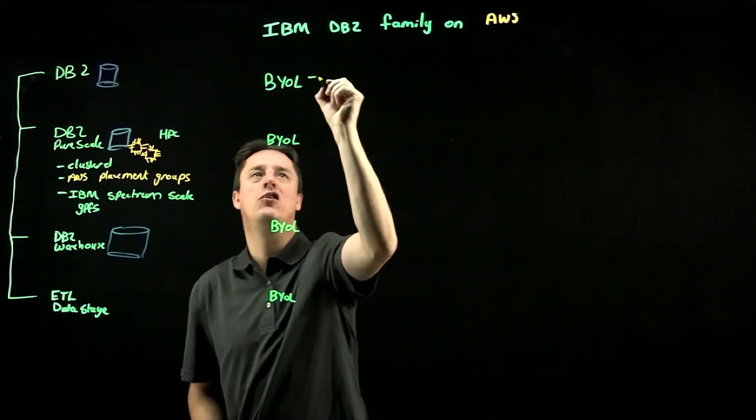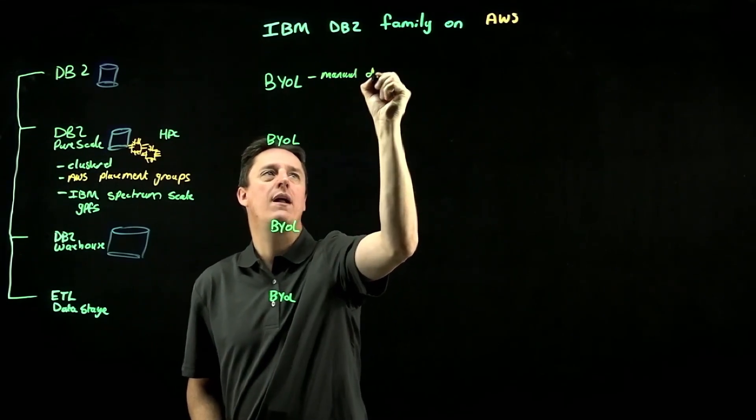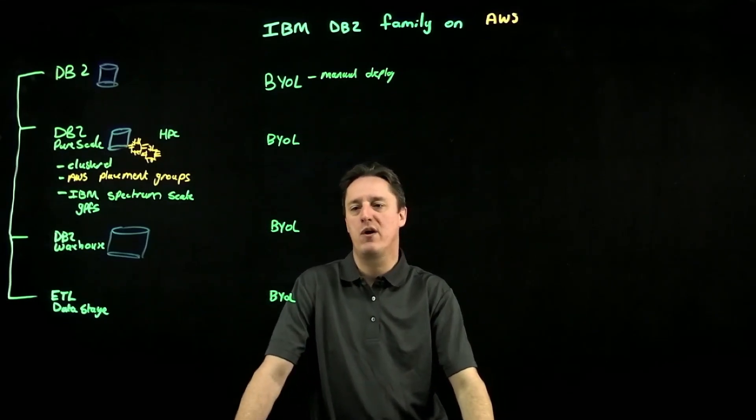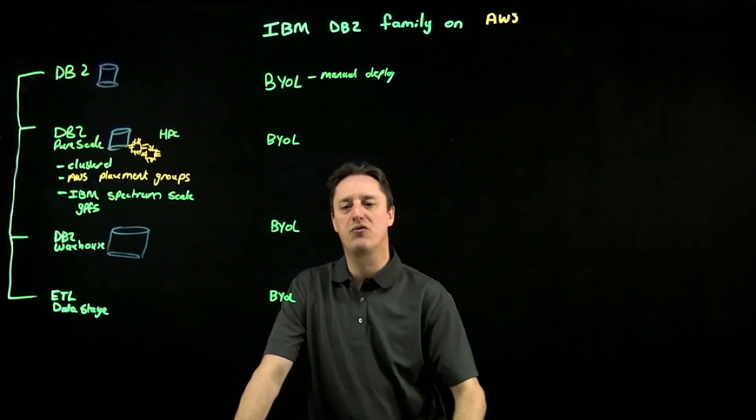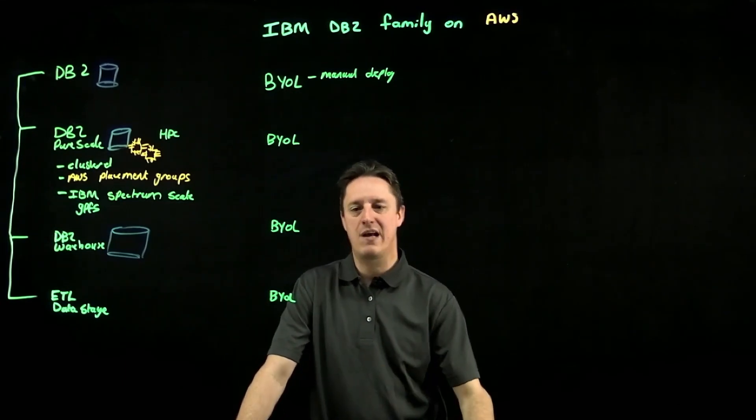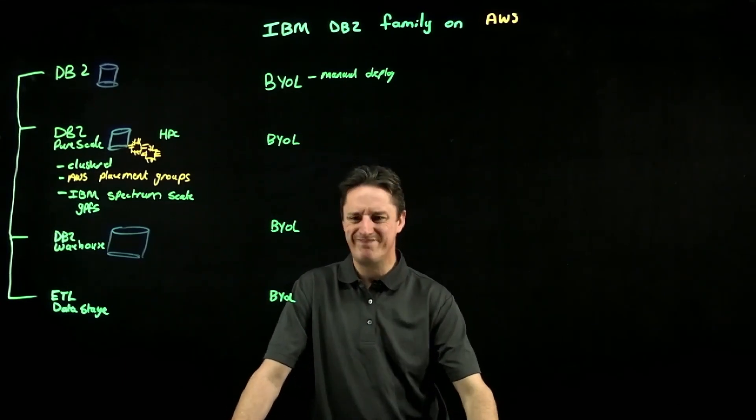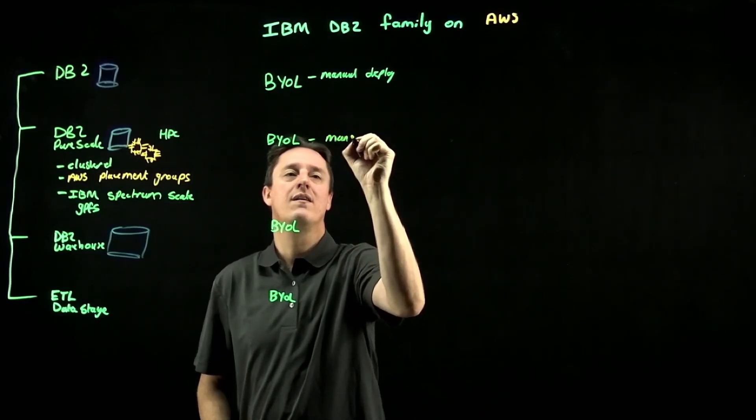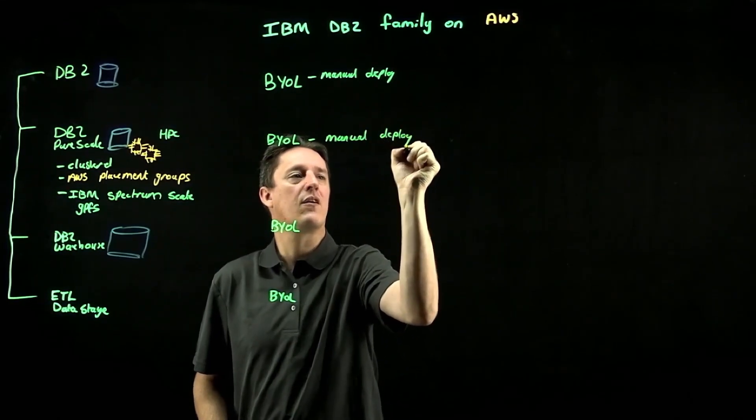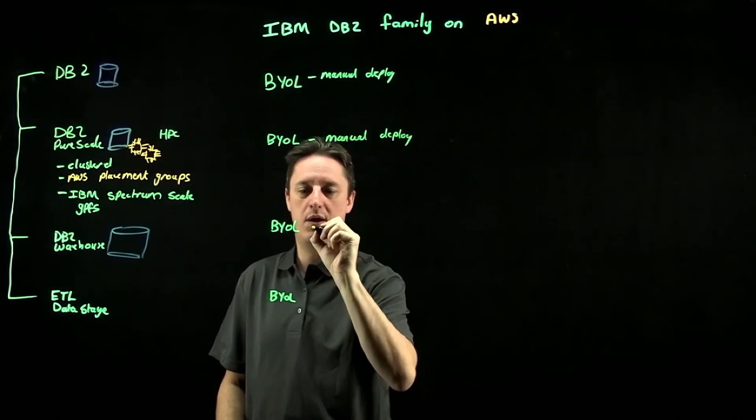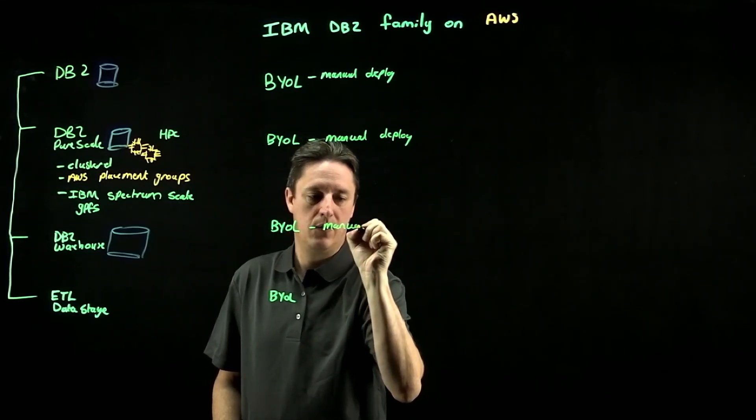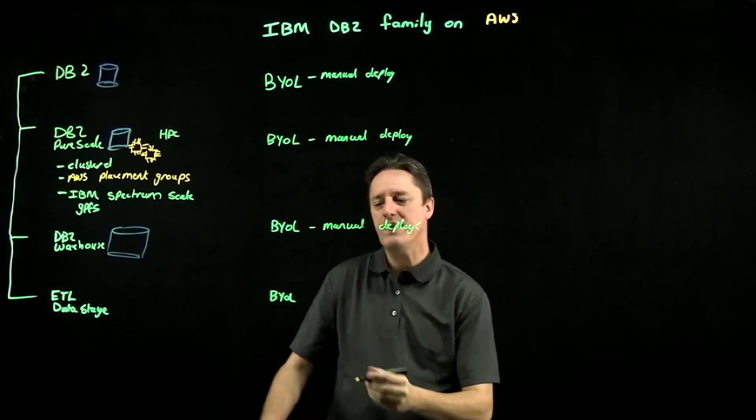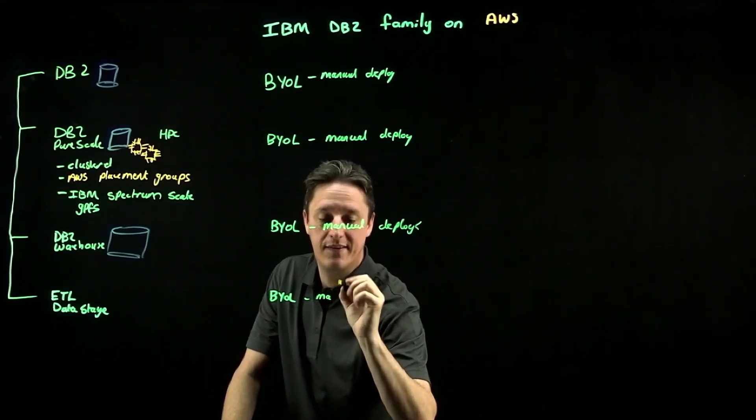You do have that option to bring your existing licenses across. Typically that can be fulfilled via a manual deploy process. So if you are manually installing that software on top of your virtualization stack or on top of your physical tin on-premises, you can repeat that process on top of EC2. Not the most pleasant journey, but that option does exist. We have that manual deploy for all of these BYOL options.